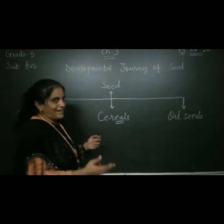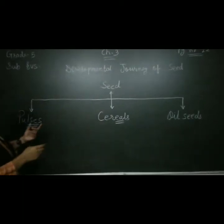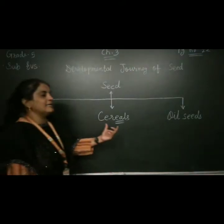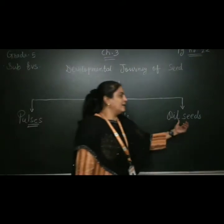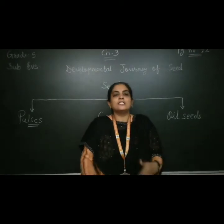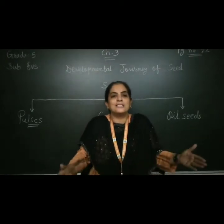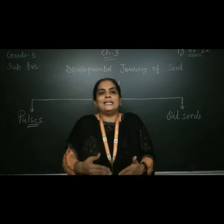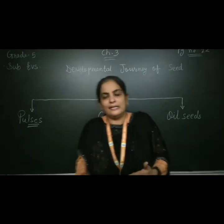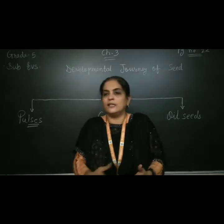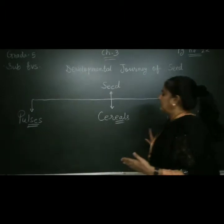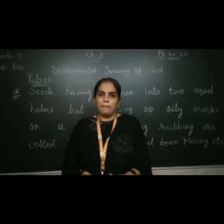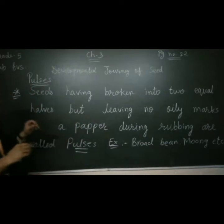Seeds are divided into 3 parts. The 1st part is pulses, 2nd is cereals, and 3rd is oil seeds. There are many types of seeds, so seeds are divided into these 3 types. Now I am explaining each part in detail. First is pulses.